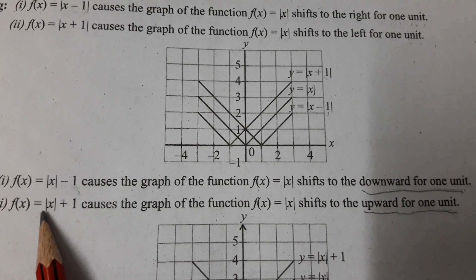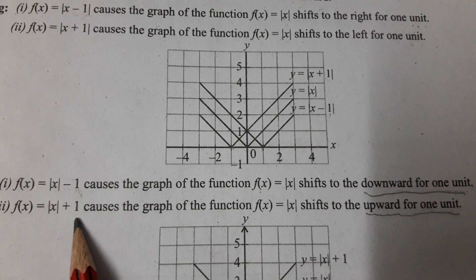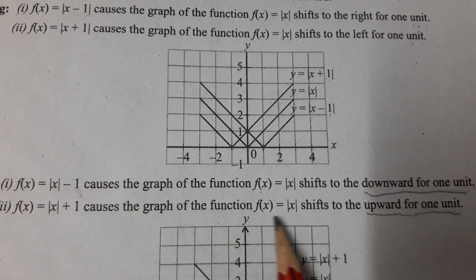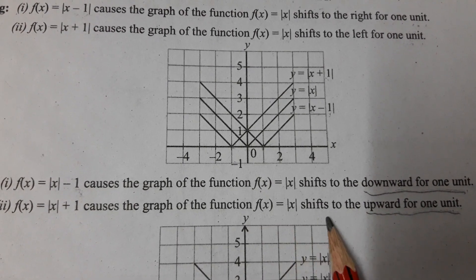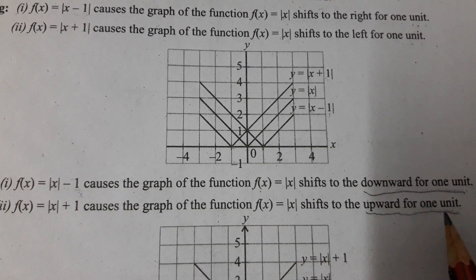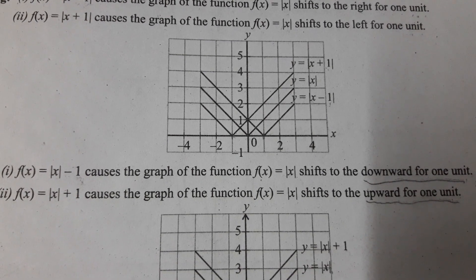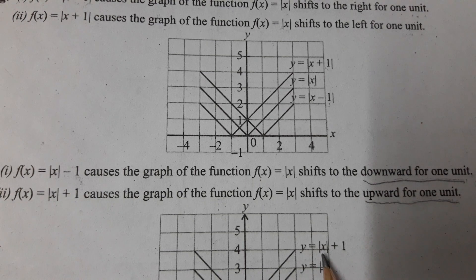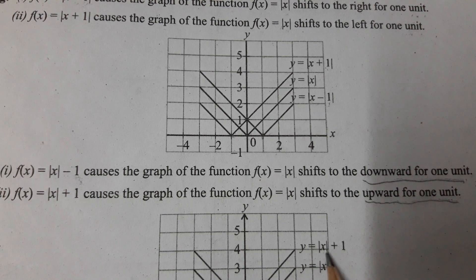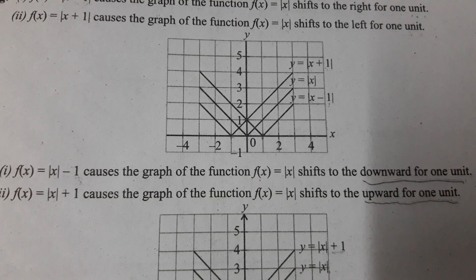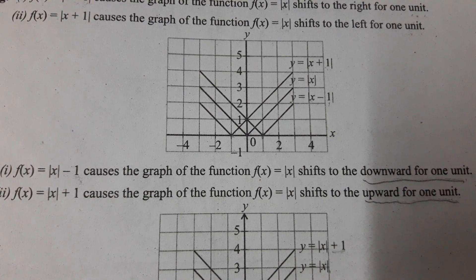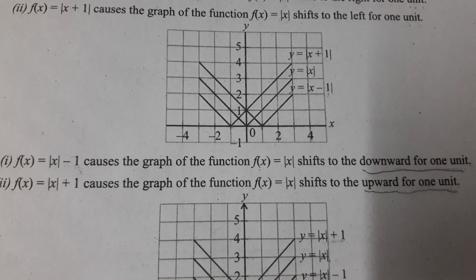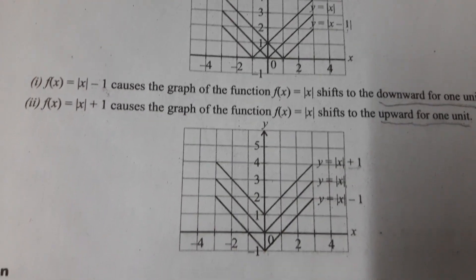f(x) = |x| + 1 causes the graph of f(x) = |x| to shift upward by 1 unit. So the summary for translation: if the argument has a plus it shifts left, minus shifts right; if a constant is added to the function it shifts upward, minus shifts downward. This is the important result for translation.